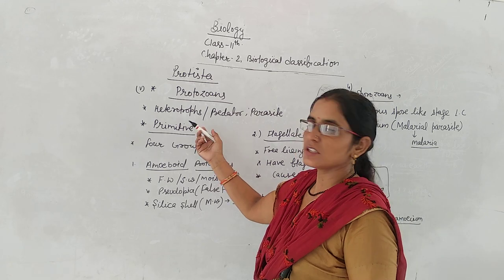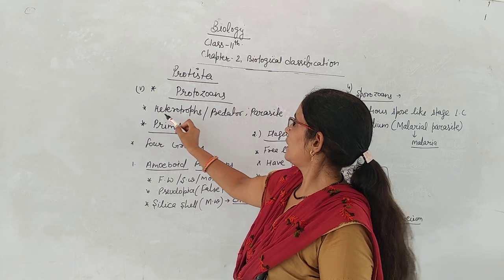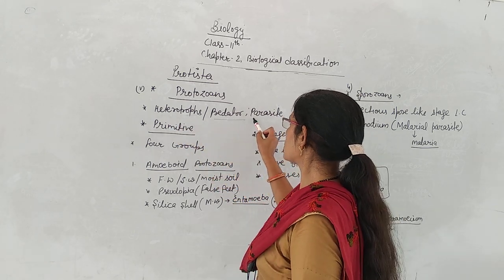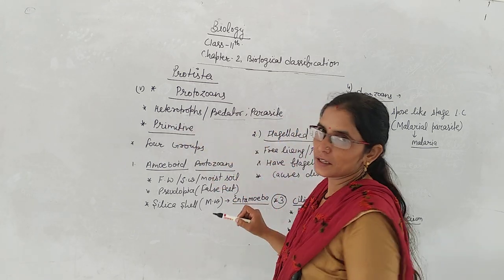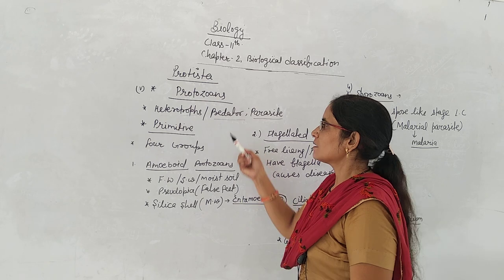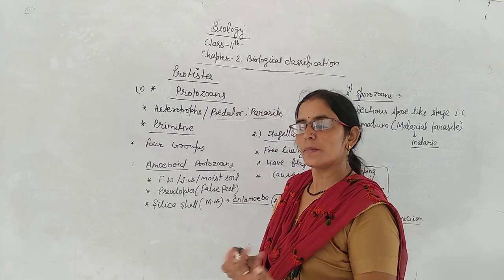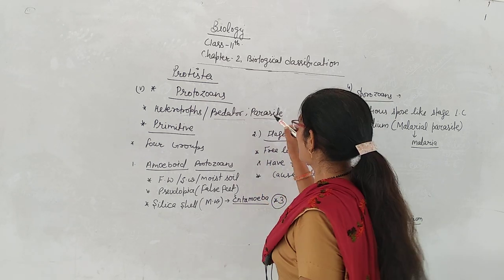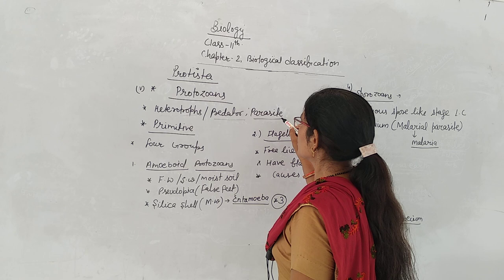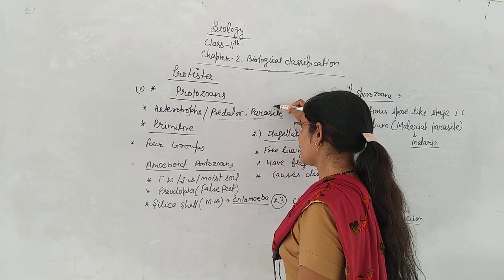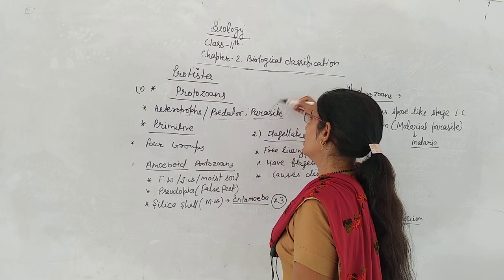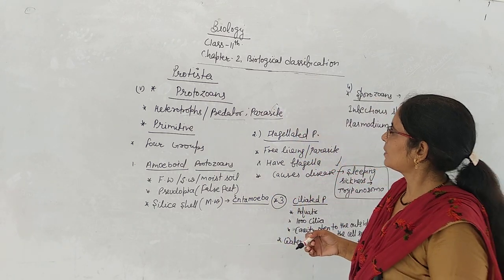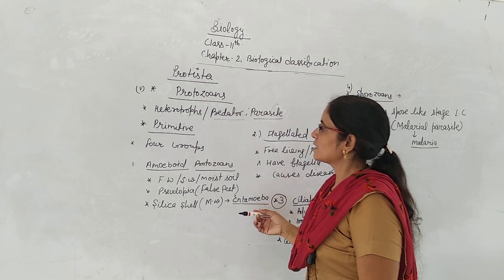Protozoa has some general features. These are heterotrophs — they may be predators and may be parasites. Predators can depend on larger organisms for their food.